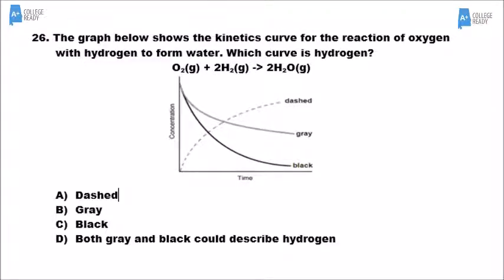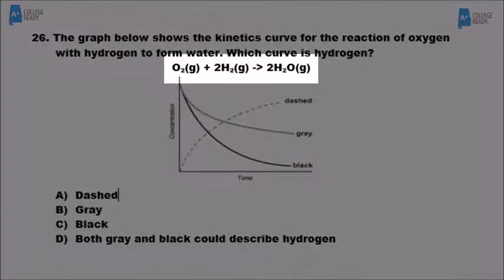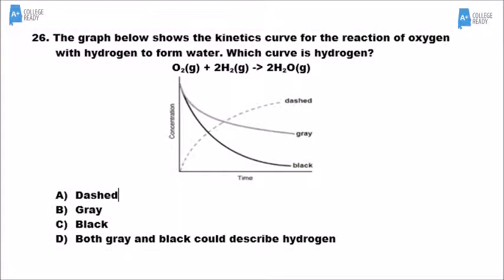For number 26, none of the graphs are straight lines, and it's not asking about order — it's asking you to understand the stoichiometry. If all concentrations start the same, the gray line goes down some but the black line goes down much more. Hydrogen in the equation is being used up at twice the rate that oxygen is used up, so the black line represents hydrogen over time.